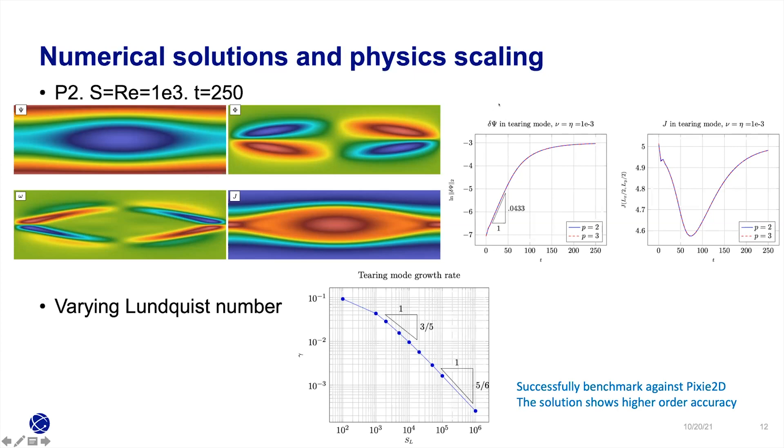If we respect the CFL constraint of the wave, we are looking at a hundred thousand time steps to resolve this curve. But in reality, we use 50 time steps because we use fully implicit. If we decrease the resistivity, this dynamics is even slower. This is why we care about fully implicit time stepping.